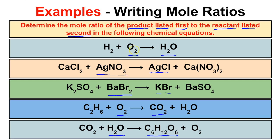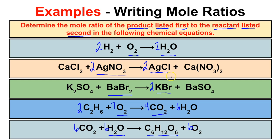In the first equation, we have two oxygens on the left, so we balance it by putting a two here and a two there. In the second, we have two chlorines on the left, so we put a two here and a two here. For the third, we simply put a two right here. For the combustion equation, we put a two in front of C2H6, a seven in front of oxygen, a four in front of carbon dioxide, and a six in front of water. For the photosynthesis equation, we put a six in front of CO2, a six in front of water, and a six in front of oxygen. Now all our chemical equations are balanced.